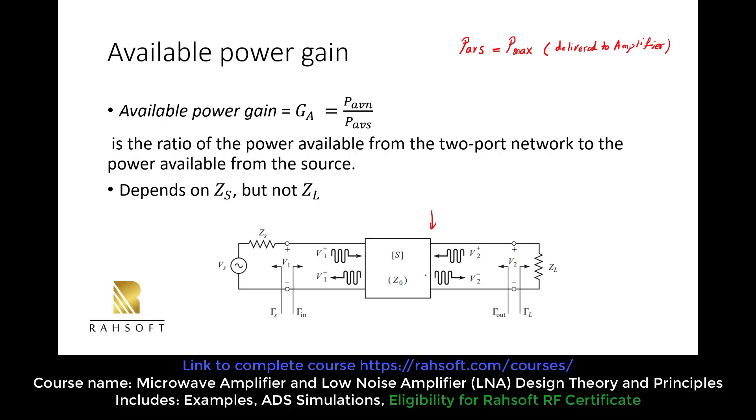It can show the maximum power which can be delivered to the load. So this is called the AVN, the available power at the output of the network, which is the maximum power, again PMAX, which can be this time delivered to our load or ZL. So this time this is delivered to the load.